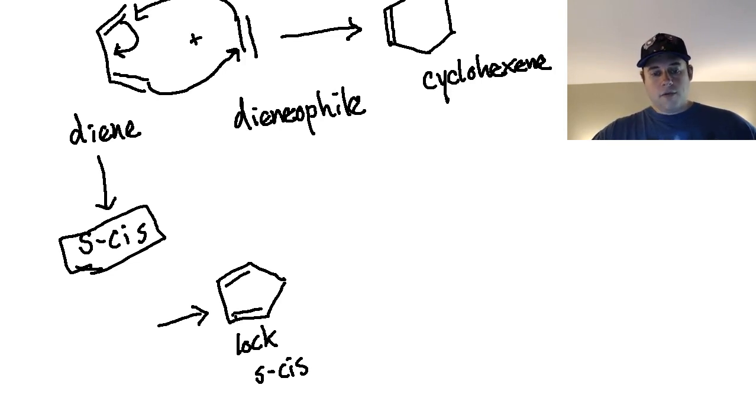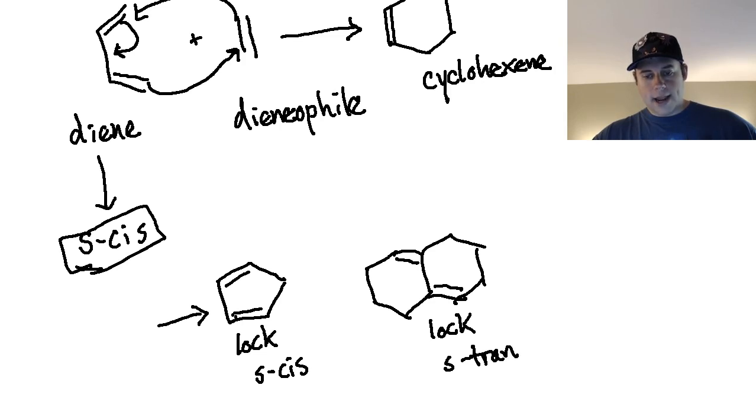You also have to be careful because you could have situations where, let's say that I have a conjugated system like this. I could have this and this. Now at that point, this compound is locked into S-trans. So this one could never undergo a Diels-Alder reaction because I've now locked this conjugation into the S-trans formation. So certain cyclic systems will be able to lock in S-cis, and that can be to our benefit.